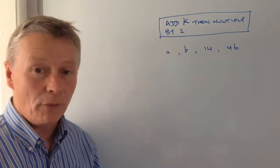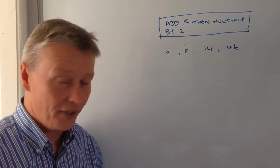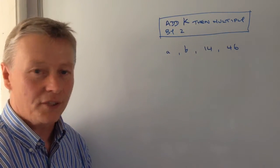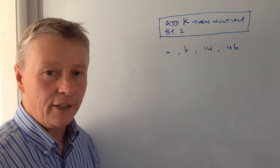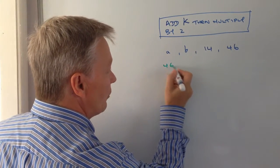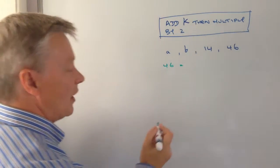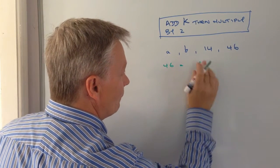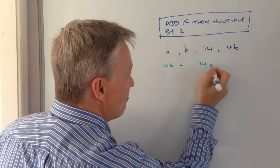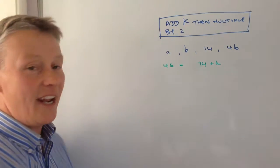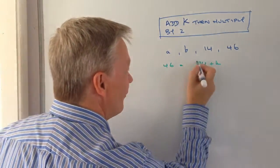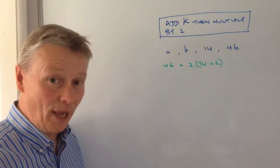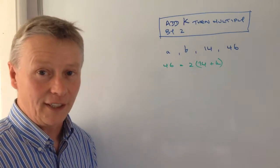So in order to do that we need to work out the value of k first. So it's the number that we add to 14 and then multiply by 2 in order to generate 46. So we put that mathematically, we're going to say 46 equals 14 plus k, then multiply by 2.